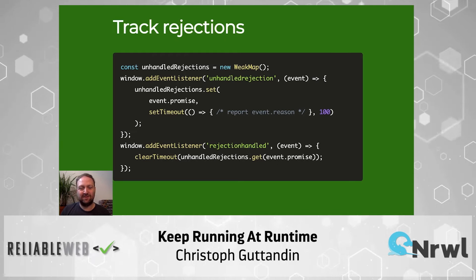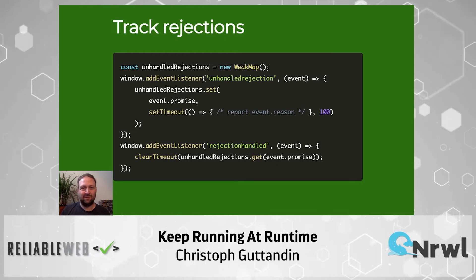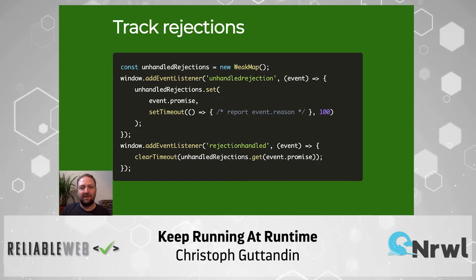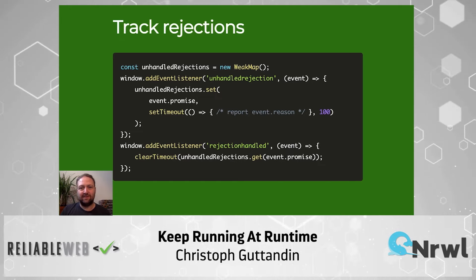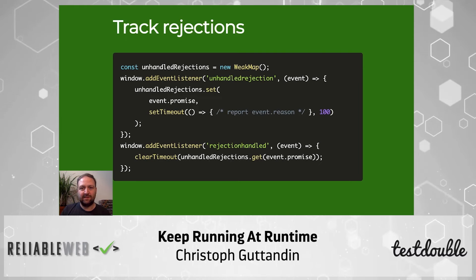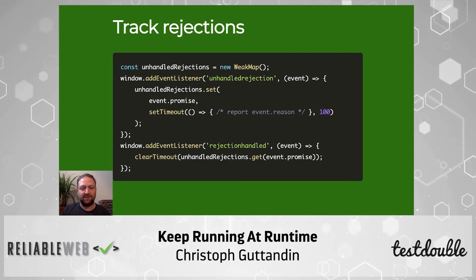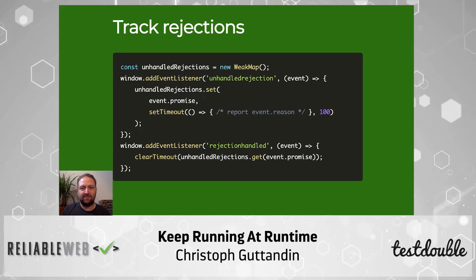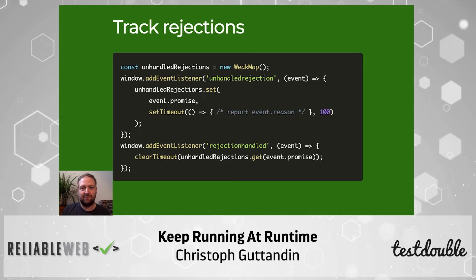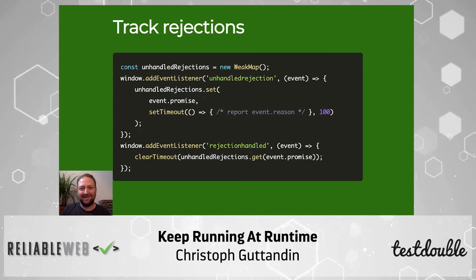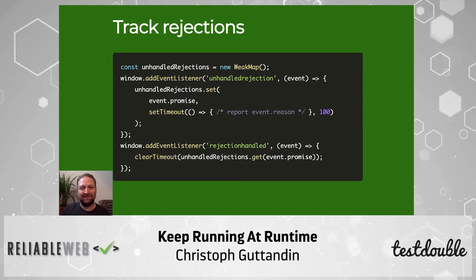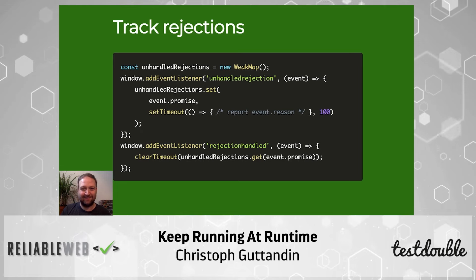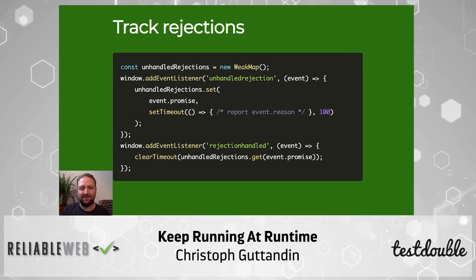This means you would normally implement something which waits for some time before reporting the rejections, to make sure you don't report any false positives. In this example, we set up a timeout of 100 milliseconds for each possibly unhandled rejection and store the timeouts in a map keyed by the promise which got rejected. In case the rejection-handled event fires with the same promise before the timeout expires, we cancel the timeout and never report the rejection.